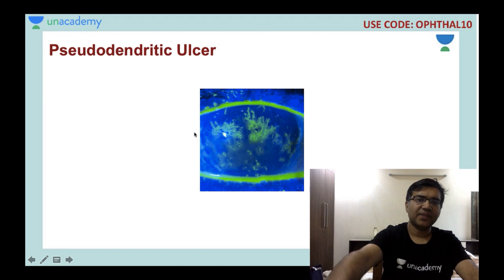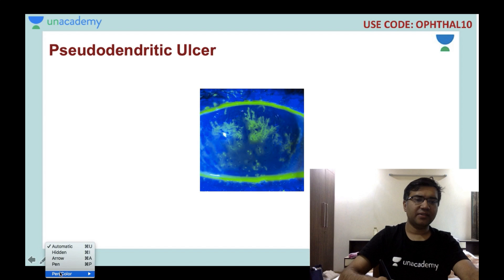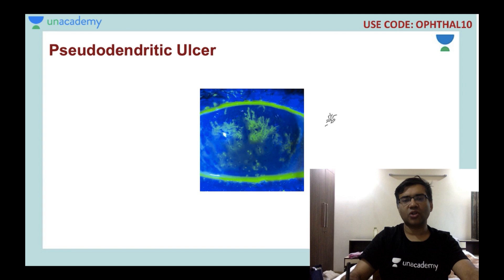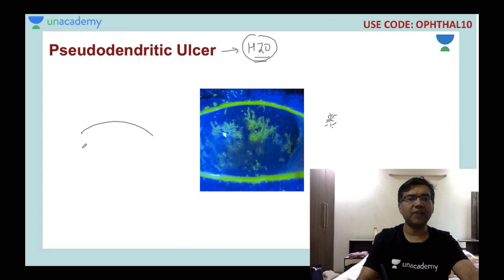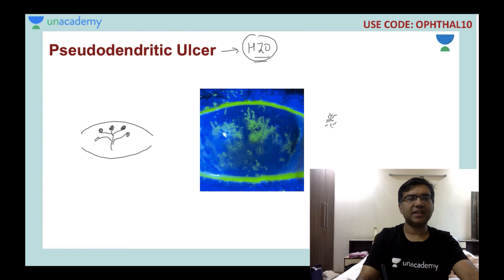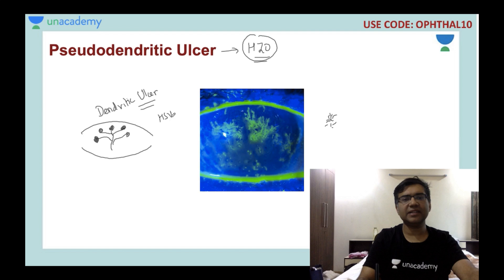The next clinical picture shows fine branching patterns over the cornea — this is called a pseudodendritic ulcer, seen in herpes zoster ophthalmicus. Do not confuse it with a dendritic ulcer, which is larger and has terminal bulbs that harbor virus cells. The dendritic ulcer is seen in herpes simplex keratitis, while the pseudodendritic ulcer is seen in herpes zoster ophthalmicus.